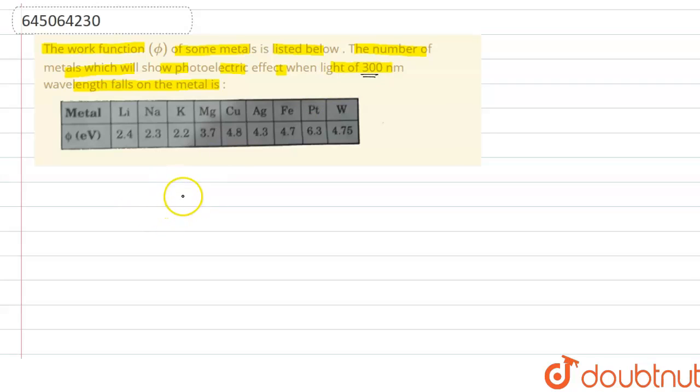Here we have the formula: E equals hc by lambda. So we will find what is the energy of this light and we will get the condition of photoelectric effect.